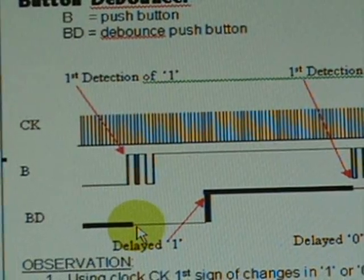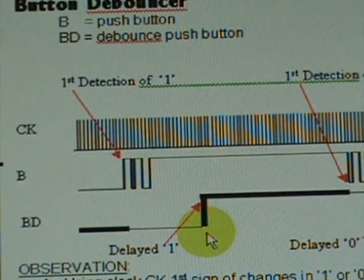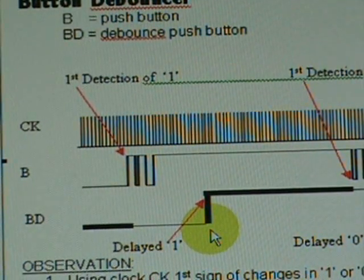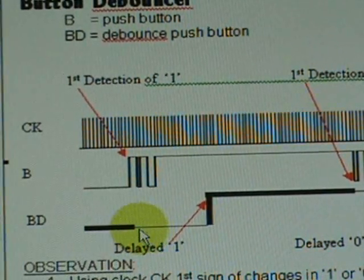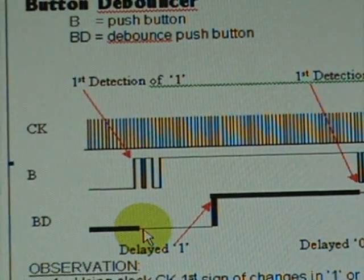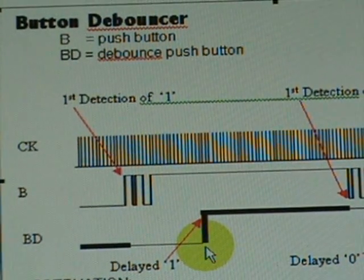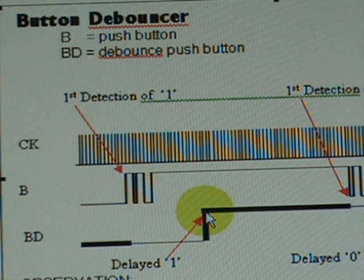if at the end of that 40 milliseconds we found the registered bits are all high, then we can safely represent that as a valid push button depression.